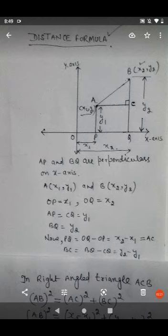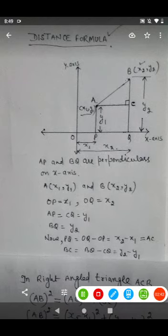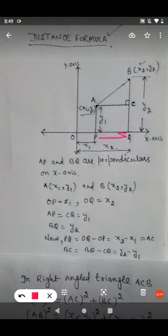Now, let us calculate the values of side AC and BC. Now, as APQC is a rectangle, so the length of side AC is same as the length of side PQ. So to calculate PQ, subtract OP from OQ.